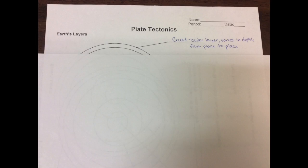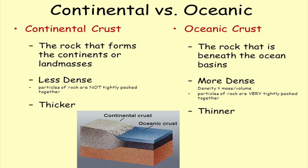We'll start with the Earth's crust. That's the outermost layer. It varies in depth from place to place. The continental crust tends to be thicker than what's called the oceanic crust, basically the rock that's underneath the oceans.